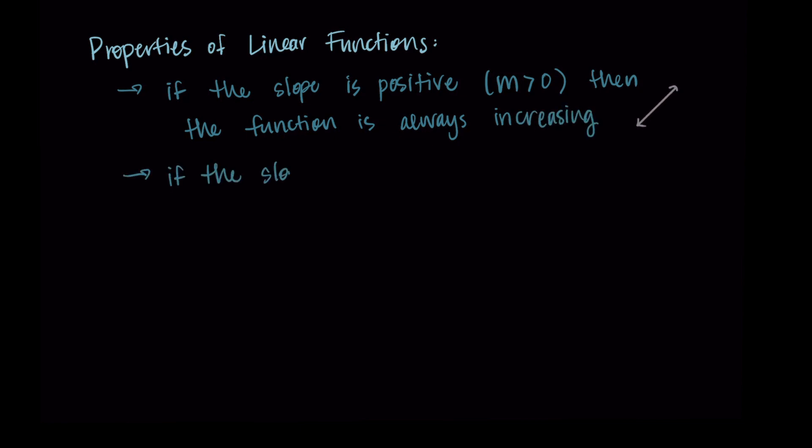In contrast, if the slope is negative, where m would be less than zero, then the function is always decreasing. So just notice it can't be increasing and decreasing, it doesn't do both, it doesn't change. A linear function is always increasing or always decreasing.